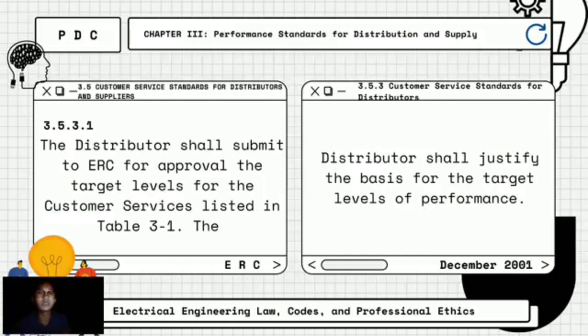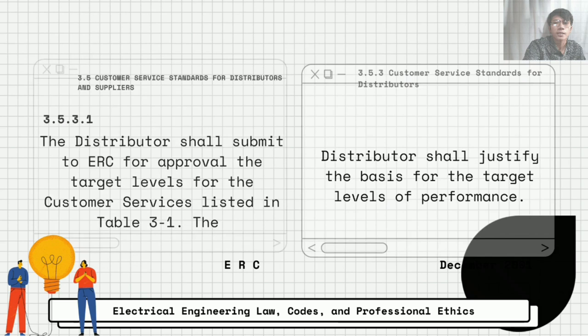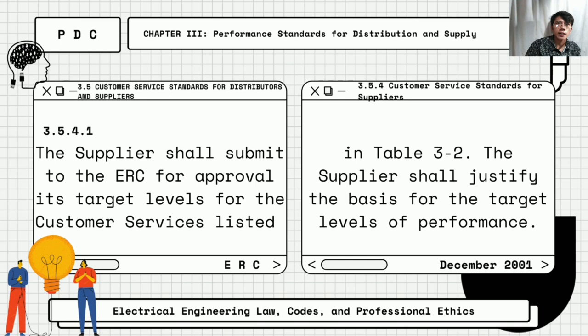The distributor shall submit to the ERC for approval the target levels for customer service listed in Table 3-1, and shall justify the basis for these target levels of performance. The distributor shall be evaluated annually to compare its actual performance with the targets. Similarly, the supplier shall submit to the ERC for approval its target levels for customer service listed in Table 3-1, justify the basis for the target levels, and be evaluated annually to compare actual performance with targets.